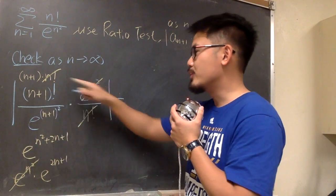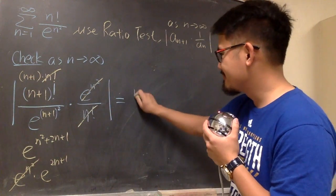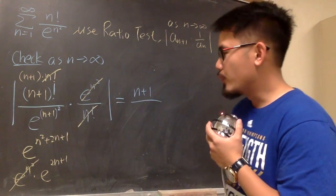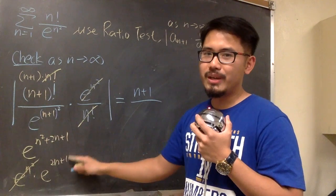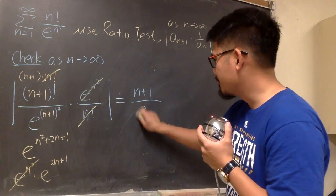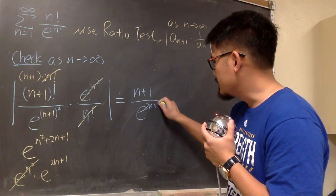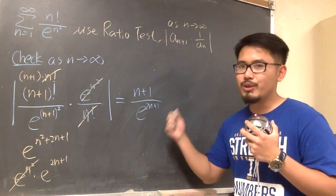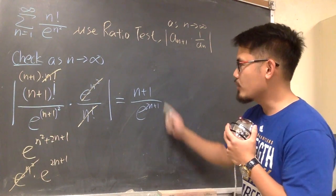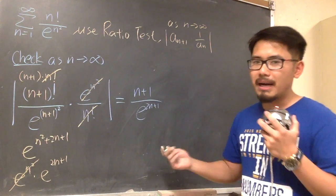Okay, now on the top, we just have n+1. On the bottom, we just have e to the 2n+1. So, this is what we have. Do we still need the absolute value? No, we don't, because everything here is positive.